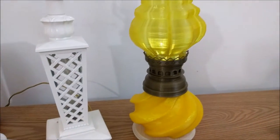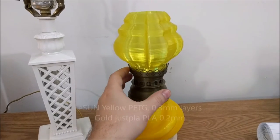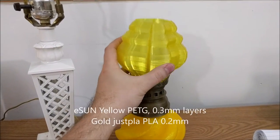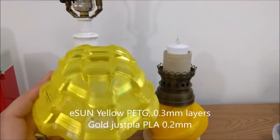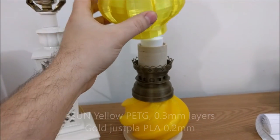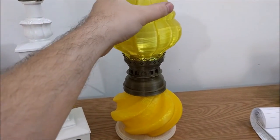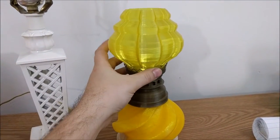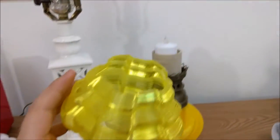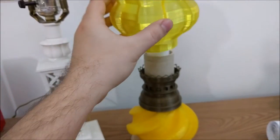I'm sure everybody's seen by now the Victorian Hurricane lamp on Thingiverse with its little lampshade that you print using vase mode on your printer with just a single perimeter all the way around.